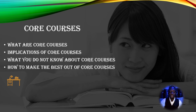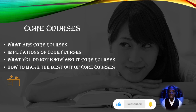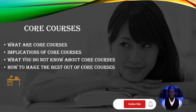On your course registration portal, core courses show higher credit unit points compared to electives. One way to recognize your core courses is by credit units — core courses typically carry higher credit units: four, three, or a minimum of two. On your student dashboard or portal, major courses are denoted by the alphabet 'C'.